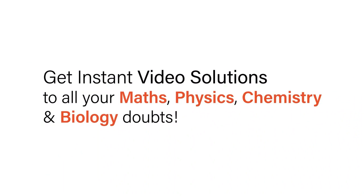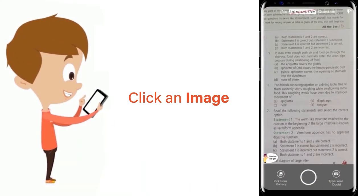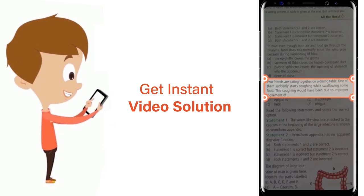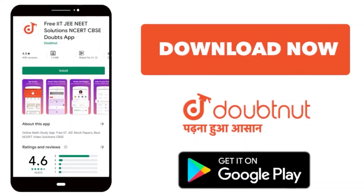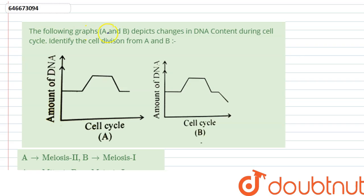With Doubtnet get instant video solutions to all your maths, physics, chemistry and biology doubts. Just click the image of the question, crop the question and get instant video solution. Download Doubtnet app today. The question here says the following graphs A and B depict changes in the DNA content during cell cycle. Identify the cell division from this graph.